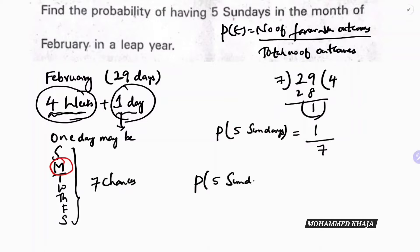Therefore, the probability of five Sundays is 1/7.